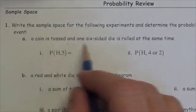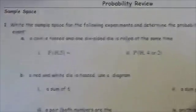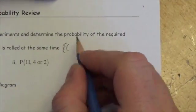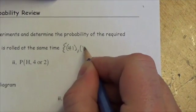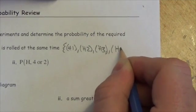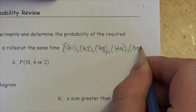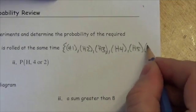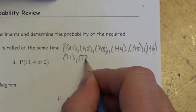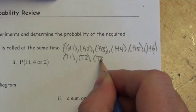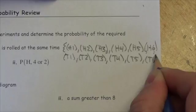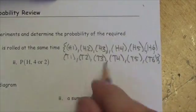When we talk about a sample space here — tossing a coin and rolling one six-sided die at the same time — our sample space is the set of points: heads and a one, heads and a two, heads and a three, heads and a four, heads and a five, heads and a six, or tails and a one, tails and a two, tails and a three, tails and a four, tails and a five, tails and a six. So there's our set of outcomes.